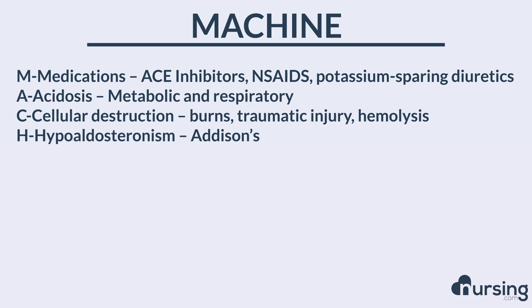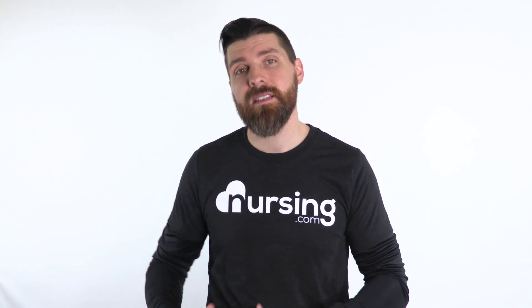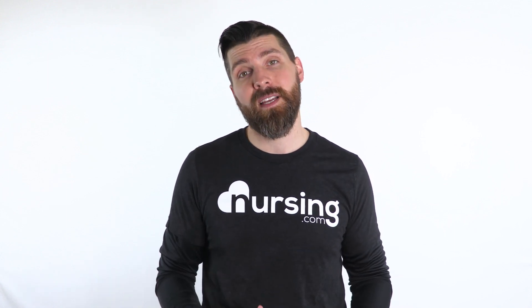H stands for hypoaldosteronism, which is Addison's disease. Addison's disease involves low output of cortisol, meaning we need to add cortisol into the body. Because this is an inherent disease, it really messes up all of the electrolytes, including potassium, which causes it to go sky high.